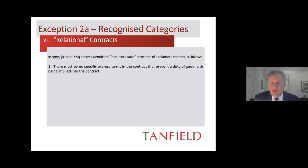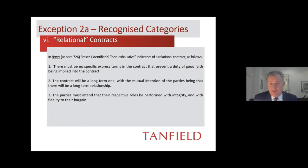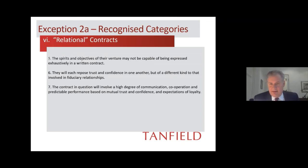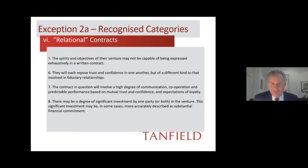Those nine indicators are: first, no specific express terms preventing the duty of good faith from being implied; second, the contract will be a long-term one with mutual intention of a long-term relationship; third, the parties must intend their roles be performed with integrity and fidelity to their bargain; fourth, the parties will be committed to collaborating with one another in performance; fifth, the spirits and objectives of the venture may not be capable of being expressed exhaustively in a written contract; sixth, they will each repose trust and confidence in one another but of a different kind than involved in fiduciary relationships; seventh, the contract will involve a high degree of communication, cooperation and predictable performance based on mutual trust and confidence; eighth, there may be significant investment by one or both parties; and ninth, exclusivity of the relationship may also be present.